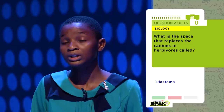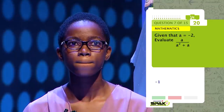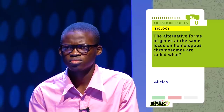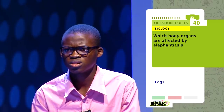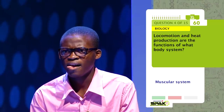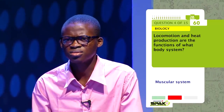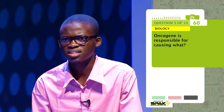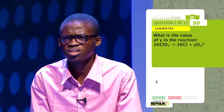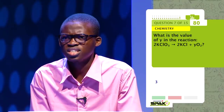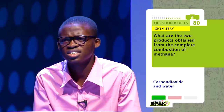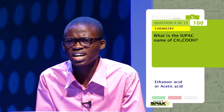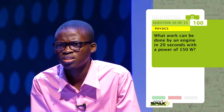Impressive, right? Well, that's not all. Mercy Oye Tayo, Abdurrahman Adde Konle, and Adeze Ozuzu also smashed their questions within 45 seconds respectively. The alternative forms of genes at the same locus — Allele. What molecule is the energy source for virtually all the work done by cells? ATP. Which body organs are affected by elephantiasis? The legs. Locomotion and heat production are the functions of what body system? Circulatory system. Oncogene is responsible for causing what? Pass. What part of the tooth is embedded in the socket of the gum? Root. What is the value of Y in the reaction 2KClO3 gives 2KCl plus Y O2? 6. What are the two products obtained from complete combustion of methane? Water and carbon dioxide. What is the IUPAC name of CH3COOH? Methanoic acid. What work can be done by an engine in 20 seconds with the power of 150 watts? Pass.